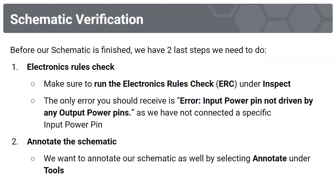Before the schematic is finished, we have two last steps. We're going to use the ERC — the Electronic Rules Check — found under Inspect. The only error we should receive is 'input power pin is not driven by any output power pins,' meaning we haven't specified a nine-volt battery powering our pin. Next, we also want to annotate the schematic under Tools > Annotate.